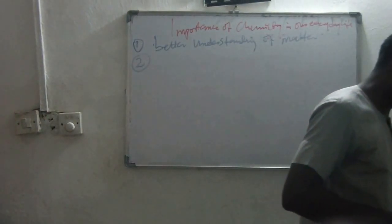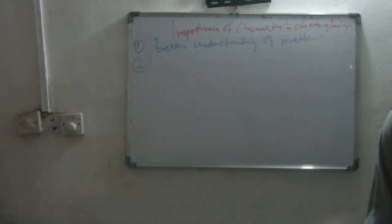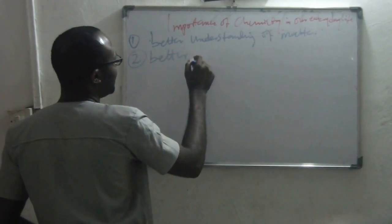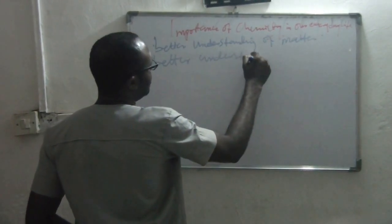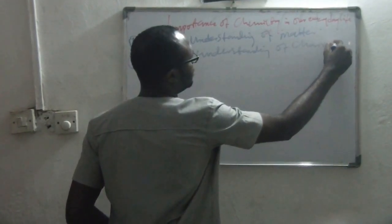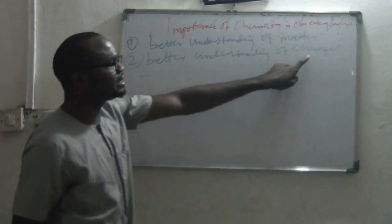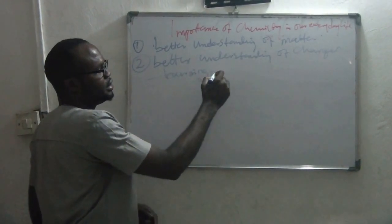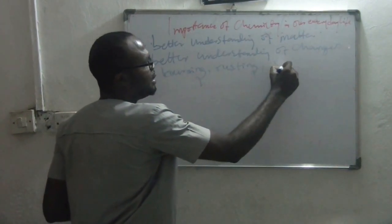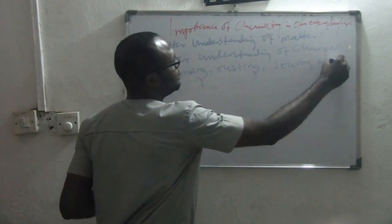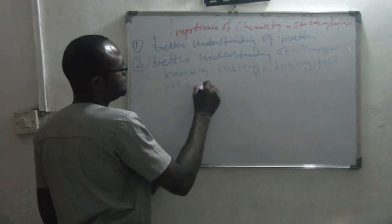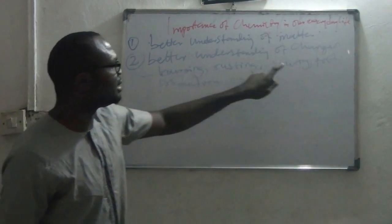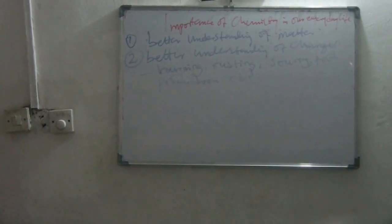Number two, another reason why you study chemistry: chemistry will give you a better understanding of changes that happen in the environment. So with chemistry, you understand changes more. Examples of those changes include burning — you understand how burning occurs — rusting, souring, food production. So knowledge of chemistry enables you to understand how burning happens, how rusting happens, how souring happens, how food is manufactured, and fertilizer production.